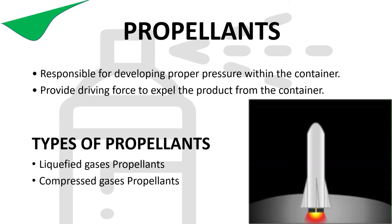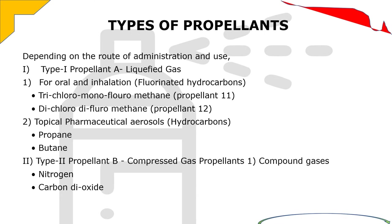Types of propellants: Liquefied gas propellants and Compressed gas propellants. Depending on the route of administration, Type 1 propellant A consists of liquefied gases used for oral and inhalation — these are fluorinated hydrocarbons. Example: Trichloromonofluoromethane, also known as Propellant 11.